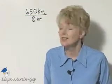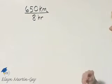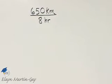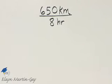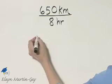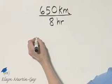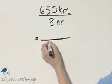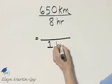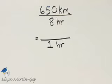Now let's look at a special type of rate called a unit rate. It's simply a unit rate when you write it so that the denominator is 1. So let's take this rate and write it as a unit rate. It's 650 kilometers in 8 hours. I've already written it as a fraction, but I want to now write it so that in the denominator I have 1.